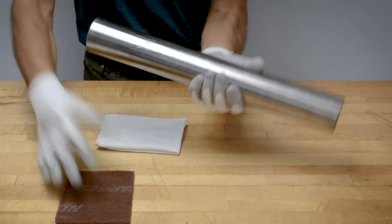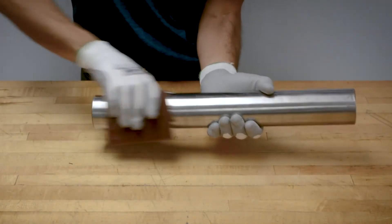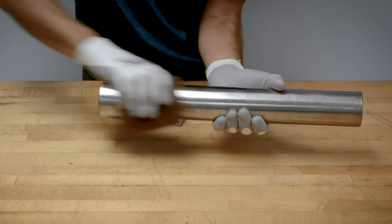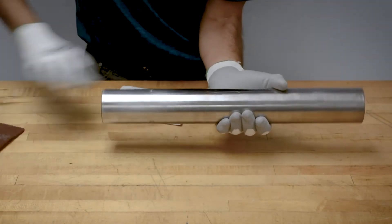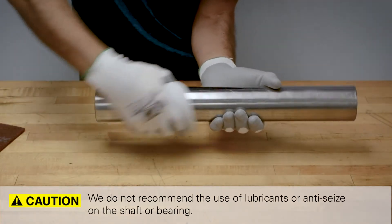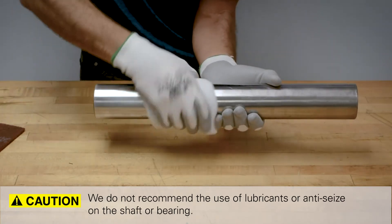The shaft should be clean and free of nicks or burrs. If necessary, remove any burrs or corrosion with sandpaper, emery cloth, or similar tool. We do not recommend the use of lubricants or anti-seize on the shaft or bearing.